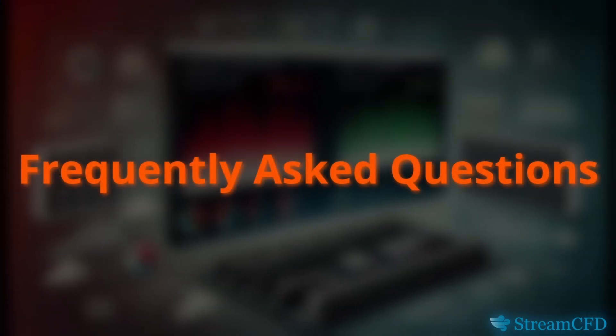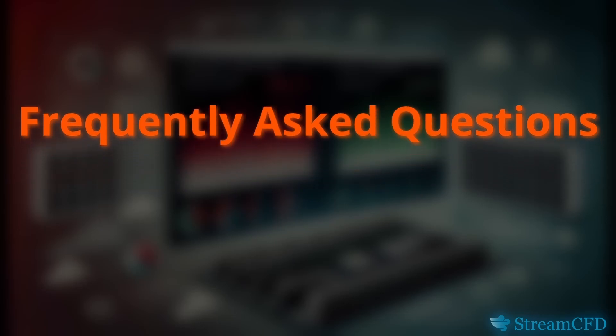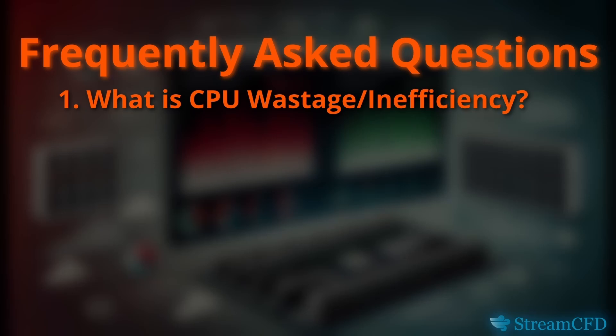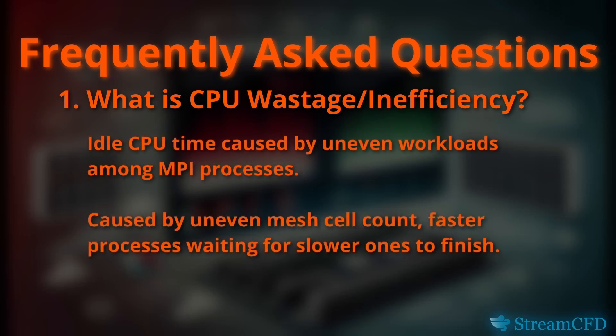Now that I've demonstrated the features, here are some commonly asked questions as FAQs. One: what is CPU wastage or inefficiency, and why does it occur? In multi-mesh simulations, CPU inefficiency arises when MPI processes have uneven workloads due to differences in mesh cell counts. Faster MPI processes finish early, remaining idle while slower processes catch up — this idle time wastes CPU resources.